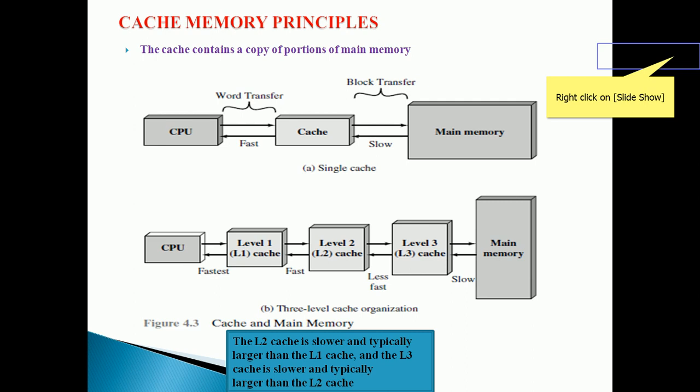Whenever CPU requests the same information from the main memory, during that time first of all information is checked. If that information is present in the level one cache, then level one cache is again giving that information to the L2 cache to see that information present into L2 cache or not, and afterwards for the L3 cache also.